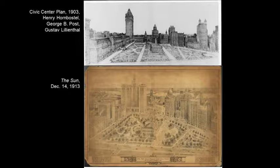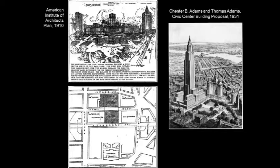You see a lot of circulation and recirculation of these images — the promotional images really for the idea of the civic center. I'll run through some of the proposals for redeveloping a kind of civic center, a grouping of municipal buildings around City Hall Park. You see on the left a plan promoted by the American Institute of Architects to build a series of large buildings sort of behind City Hall outside of City Park along the north side of Chambers Street.